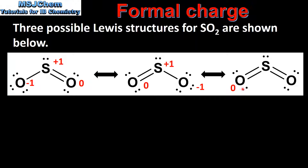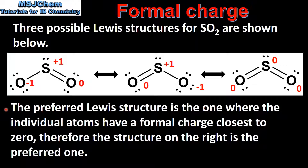Next we look at the Lewis structure on the right. For this oxygen atom we have six valence electrons, minus four non-bonding electrons, minus half of four which is two, giving a formal charge of zero. For the sulfur atom we have six minus two, minus half of eight which is four, giving a formal charge of zero. And for the oxygen atom on the right we also get a formal charge of zero. The preferred Lewis structure is the one where the individual atoms have a formal charge closest to zero, therefore the structure on the right is the preferred one.